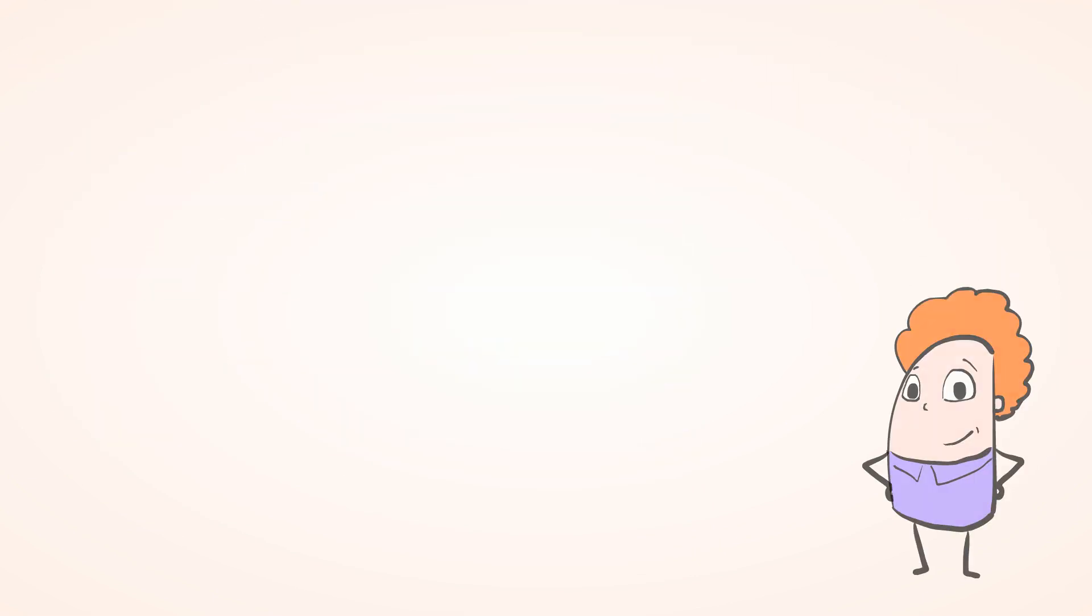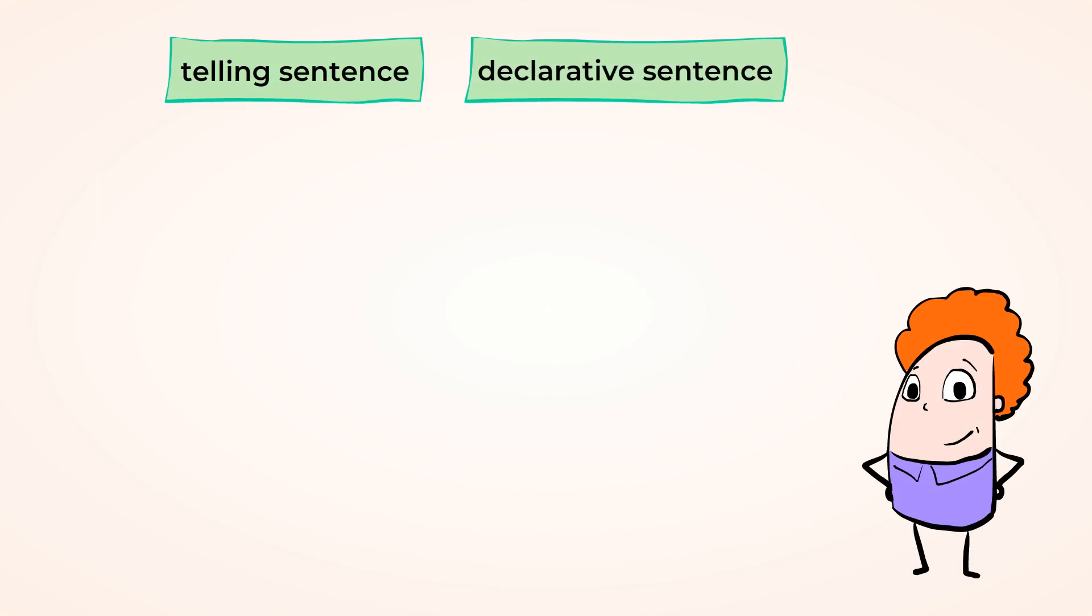The most common type of sentence we use is a telling sentence or a declarative sentence. A telling sentence just tells us things. And it can also be called a statement.